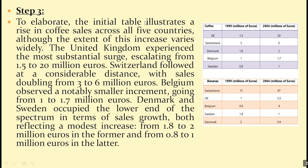To elaborate, the initial table illustrates a rise in coffee sales across all five countries, although the extent of this increase varies widely. The United Kingdom experienced the most substantial surge, escalating — which means increasing — from 1.5 to 20 million euros. Switzerland followed at a considerable distance, with sales doubling from 3 to 6 million euros. We're taking into consideration the level of the increase, not the total number, which is why Belgium comes next despite another country having a higher absolute figure.